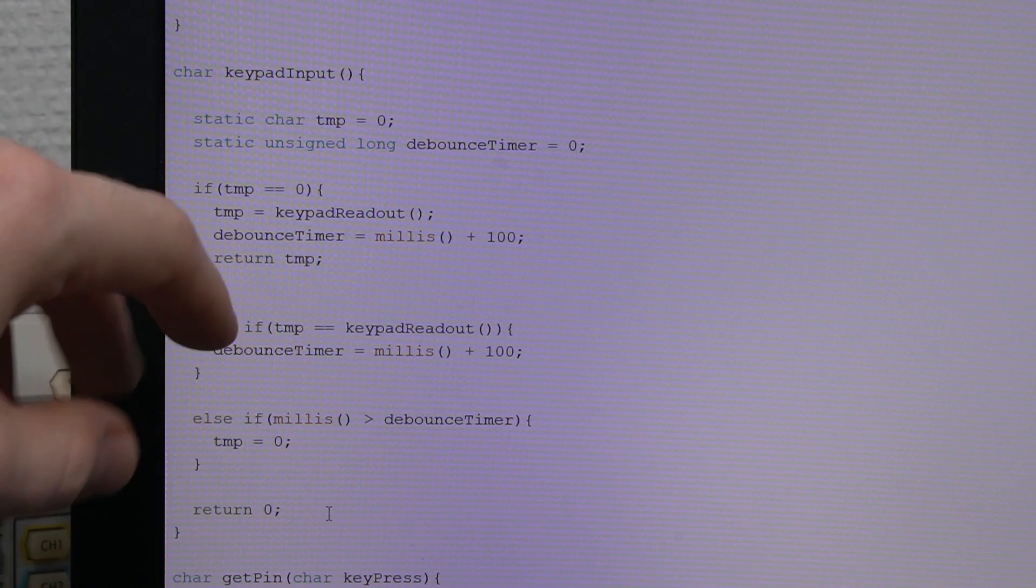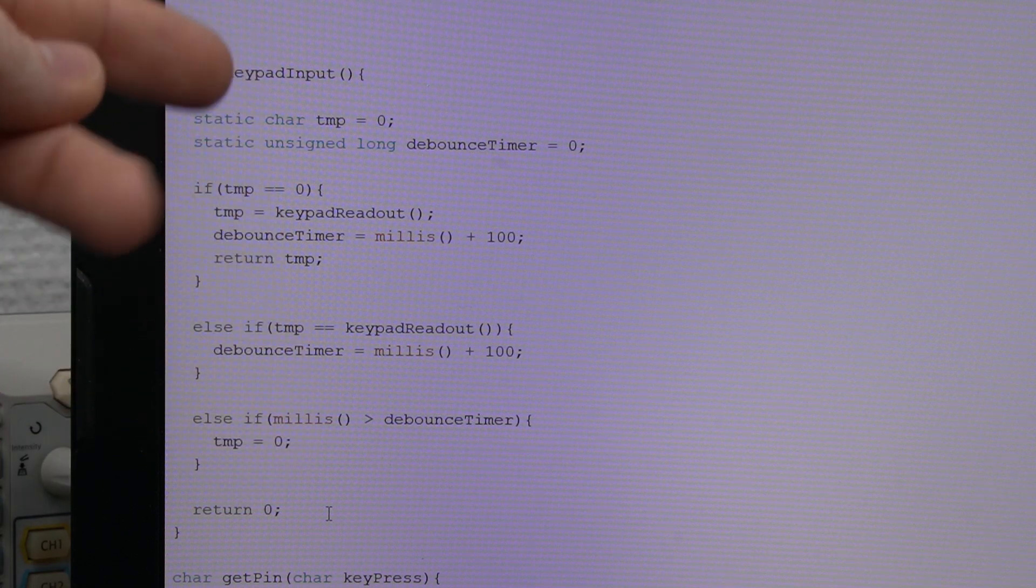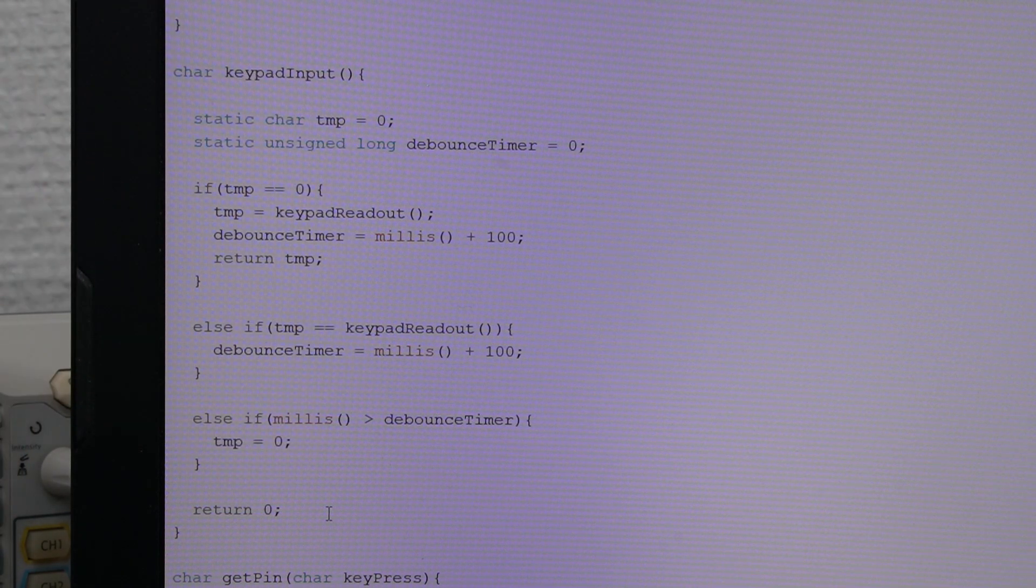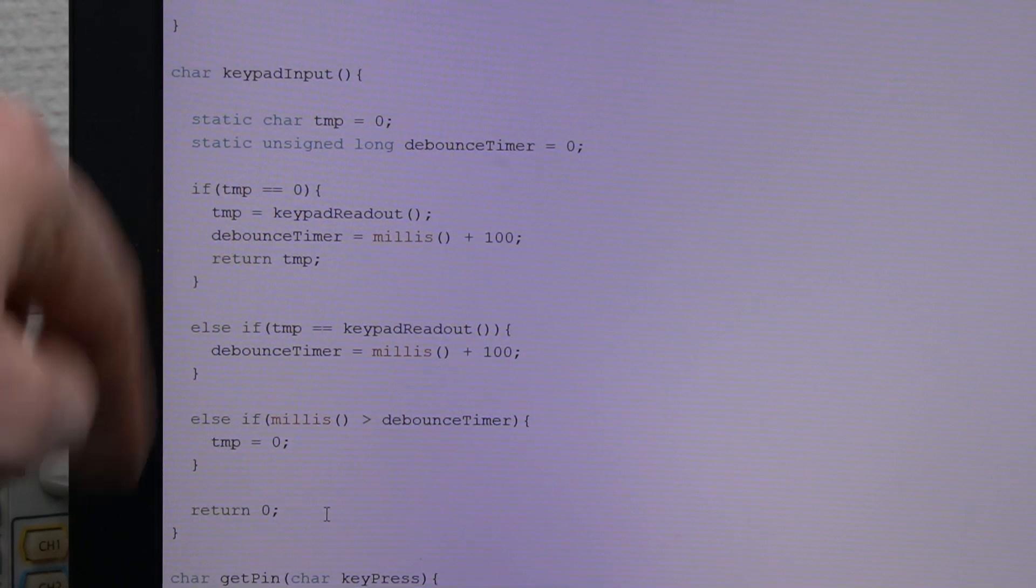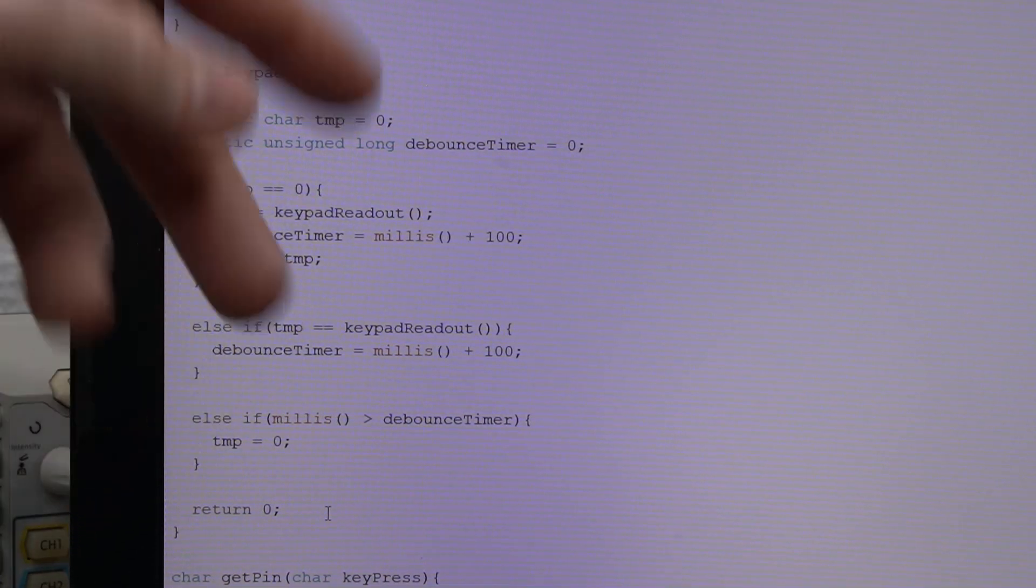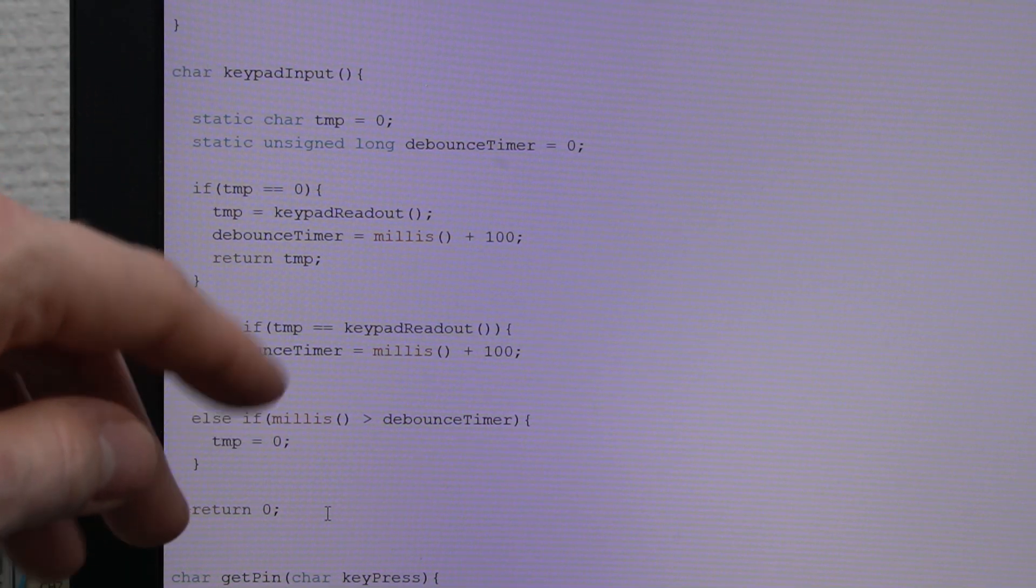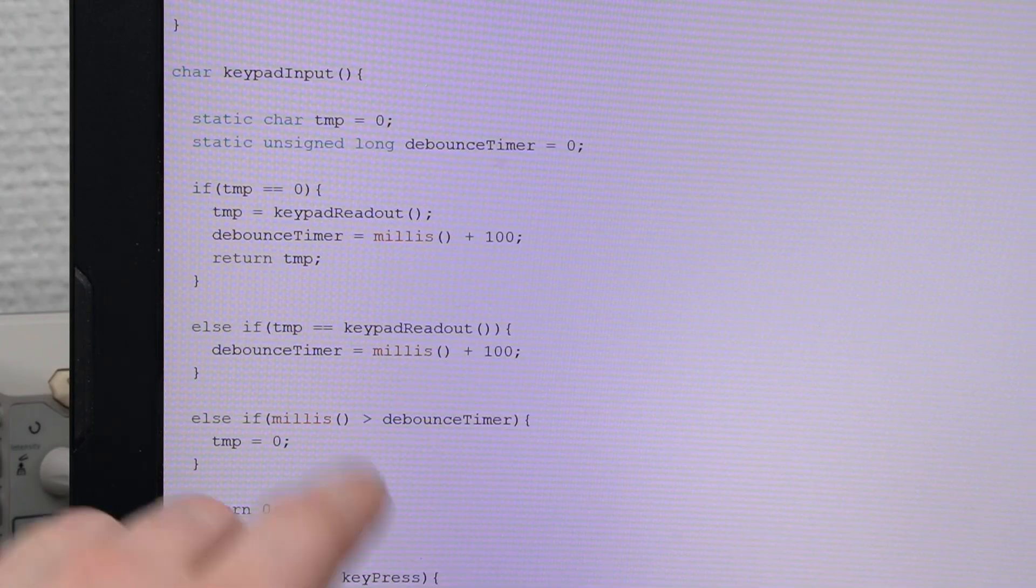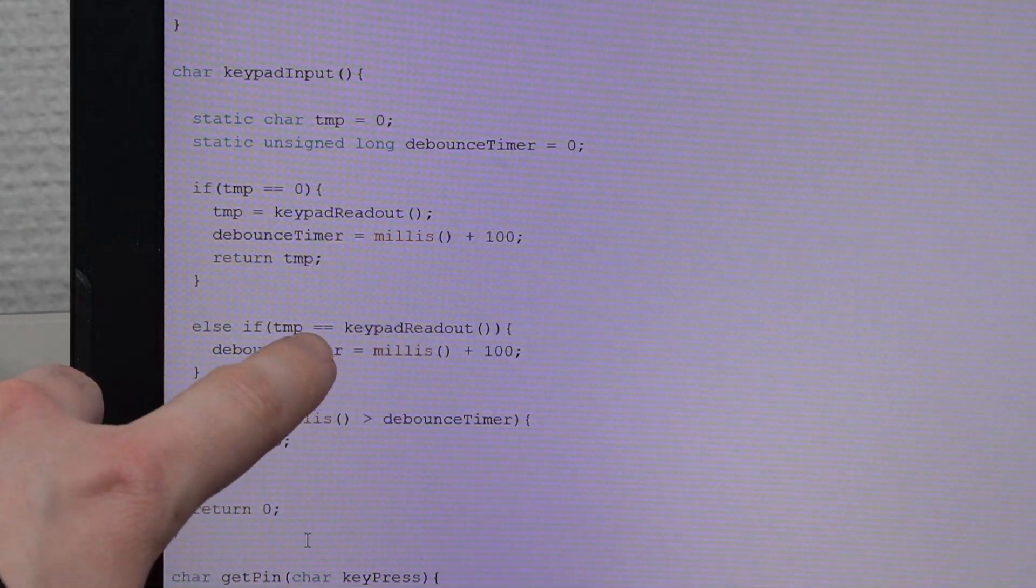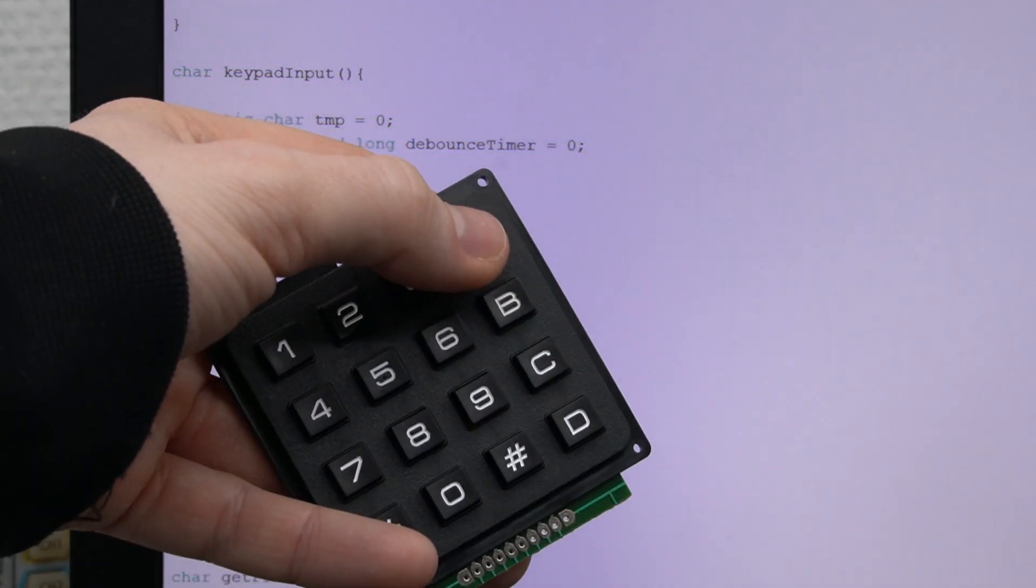it will just put temp as keypad readout and it will set a timer and return temp. So this function in the end returns the actual value for the program. When you have pressed the button previously, we don't want the next loop round to register any key press. We want to wait for the debounce timer to run out. We do want to check if you're still pressing the same key though, meaning that you're actually just not finished pressing yet.